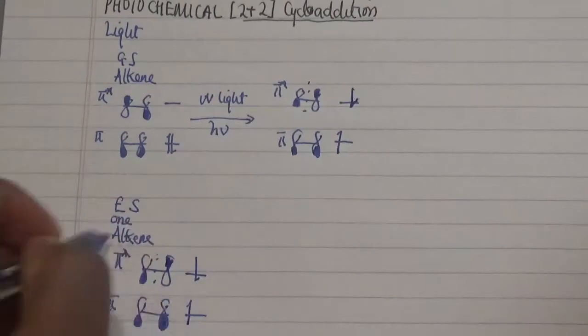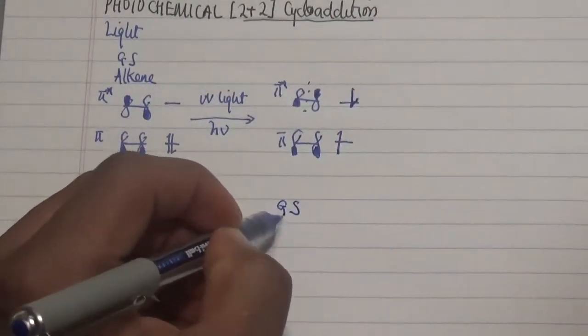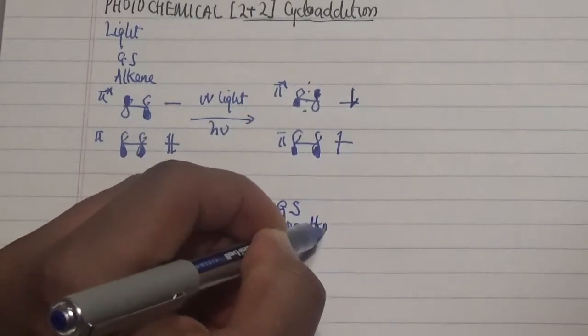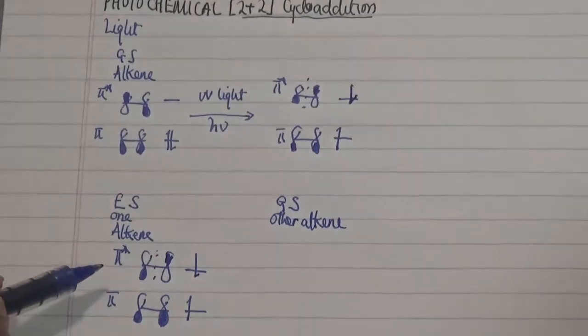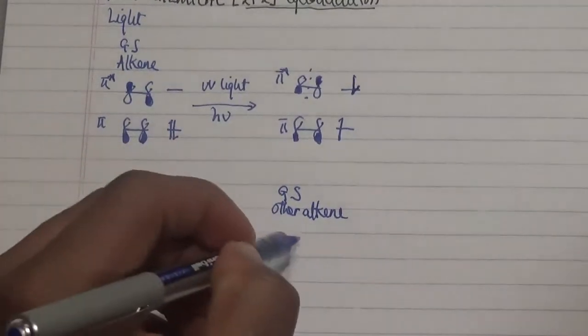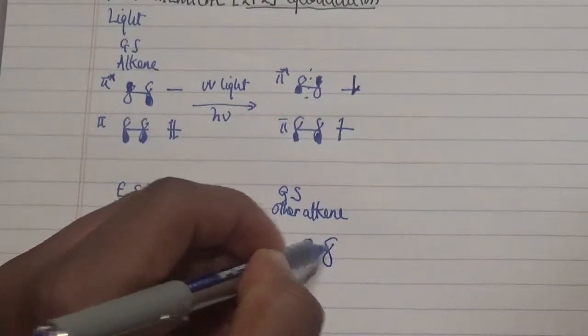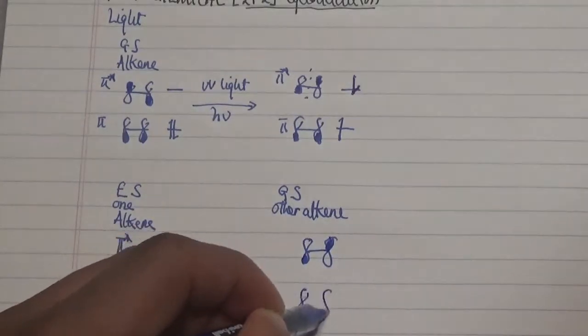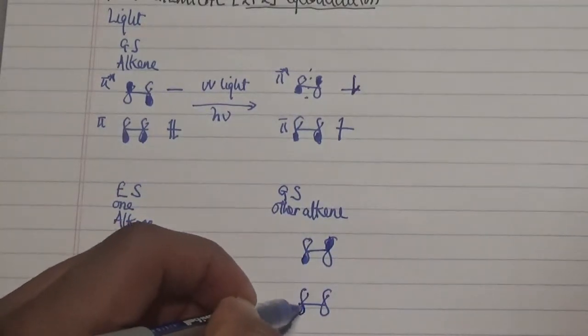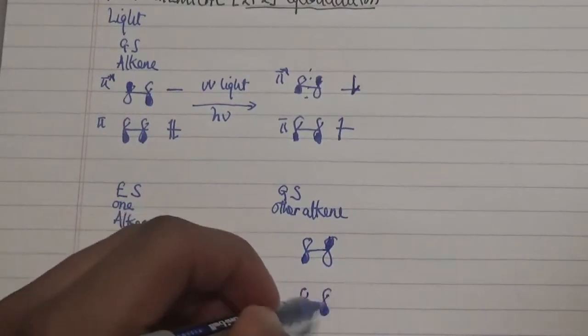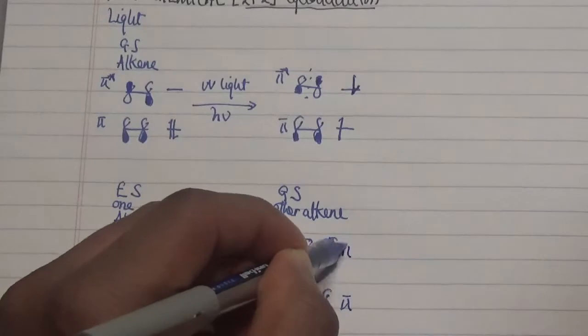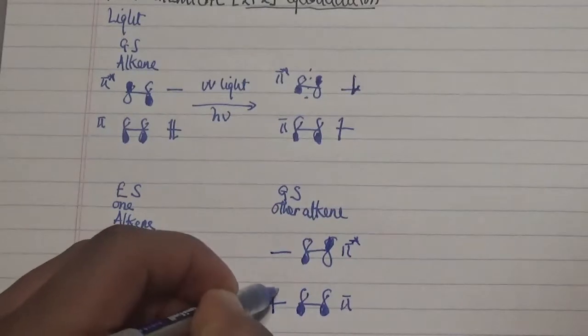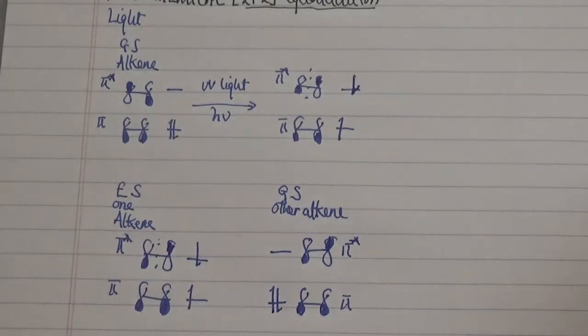If you combine this with the ground state of another alkene, what we have is the same combination in terms of the molecular orbitals—π and π*. However, we still have a regular case where they are all paired in this lowest energy level state.